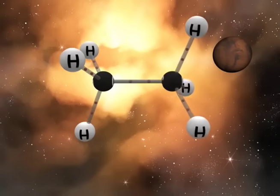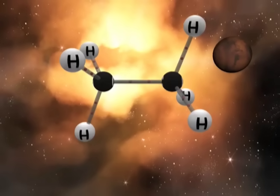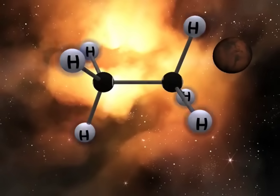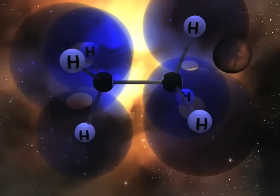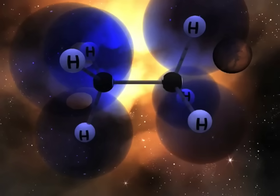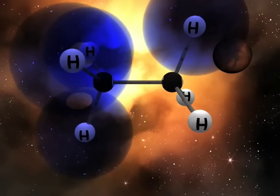Conformations are different arrangements of atoms due to these rotations. When we place the electron density around each hydrogen atom, we see that the hydrogen atoms from adjacent carbons do not touch. To make this diagram easier to view, we will remove the electron density from two of the hydrogen atoms from the back carbon.